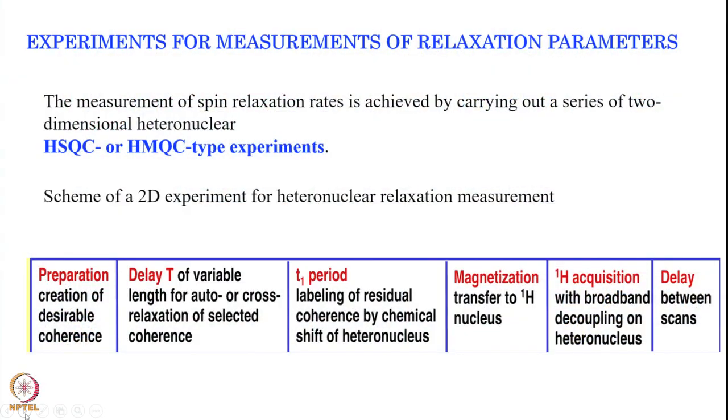Typically we measure the spin relaxation rate by carrying out two-dimensional heteronuclear experiments such as HSQC — heteronuclear single quantum coherence or heteronuclear multiple quantum coherence experiment. We can measure 13C or N15 relaxation; proton relaxation is rather complicated, so it is not directly measured in protein NMR.